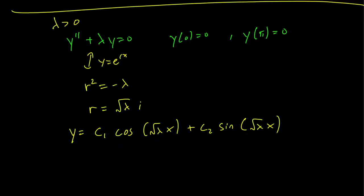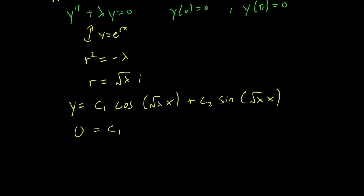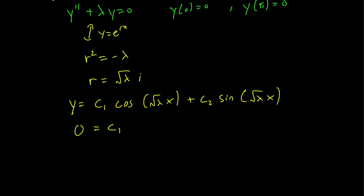Let's plug in the initial condition, the endpoint conditions and see what happens. So y(0) equals zero implies that zero equals c₁. And y(π) equals zero implies that zero equals c₁ cos(√λ π) plus c₂ sin(√λ π). Again, c₁ equals zero so we can just ignore this part.